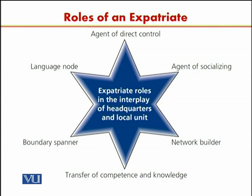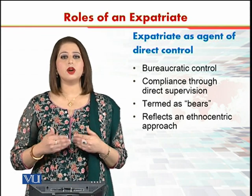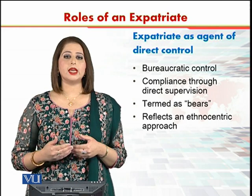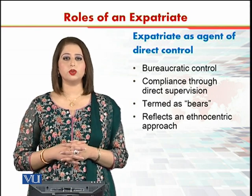In this diagram you can see that there are six roles considered to be that of an expatriate. Starting from the top: the expatriate is an agent of direct control, an agent of socializing, a network builder, used for transfer of competence and knowledge, plays the role of boundary spanner, and also serves as a language node. Now let's look at what all these six terms mean and what the expatriate is supposed to do in each role.